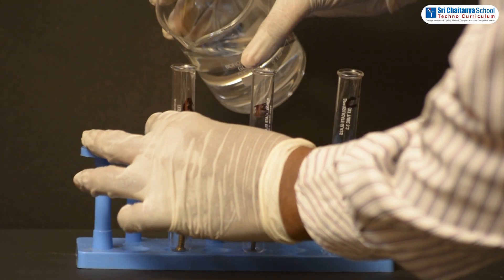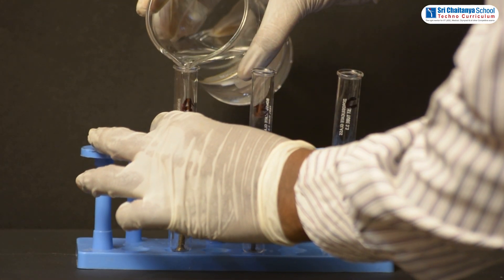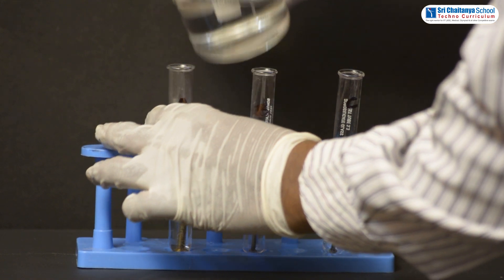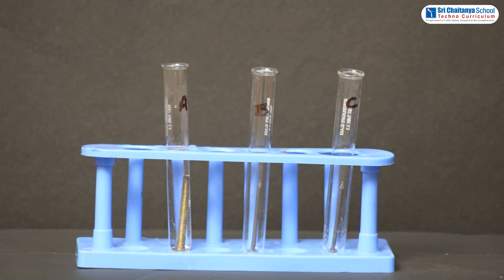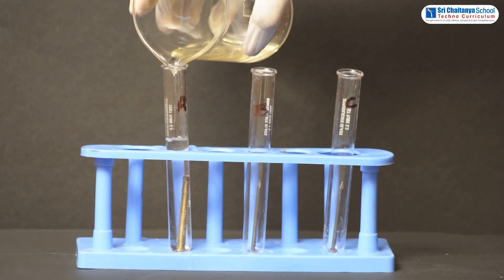Put boiled water in test tube A to remove any dissolved air. Add some oil and cork it.